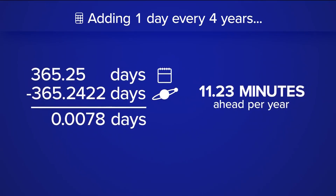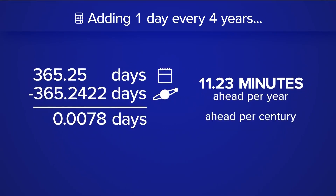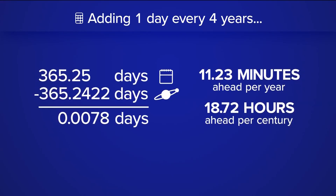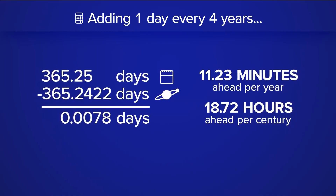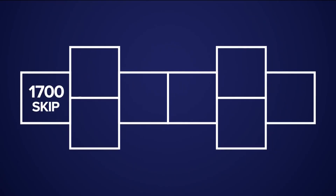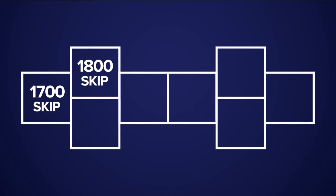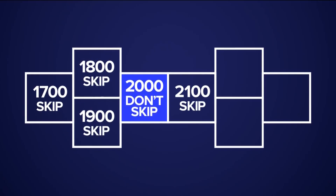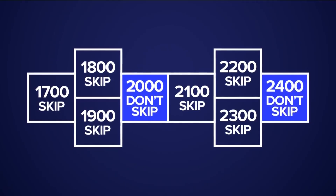And over 100 years, our calendar would be about 18 hours off, which doesn't sound like a huge problem, but over centuries this would eventually throw off our calendar. To help bring this number closer to zero, we'll actually skip leap years to help realign the calendar to the solar year. But the rules are very specific. To help understand this, we can use leap year hopscotch to solve the problem.